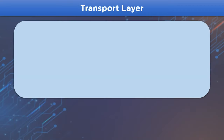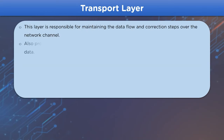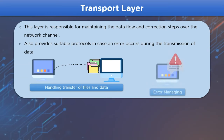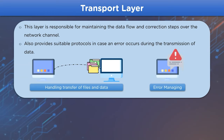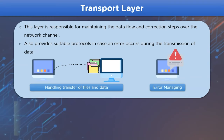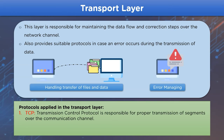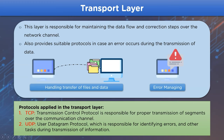Moving forward, we have the transport layer. This layer is responsible for establishing a connection between the sender and receiver device. It divides data from the application layer into packets, creates sequences, and transfers them to the destination device. It also maintains error-free transmission and controls data flow rate. The protocols applied here are TCP (Transmission Control Protocol), responsible for transmission of segments over the communication channel, and UDP (User Datagram Protocol), responsible for identifying errors in data to be transmitted.